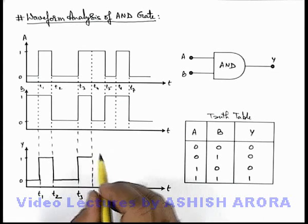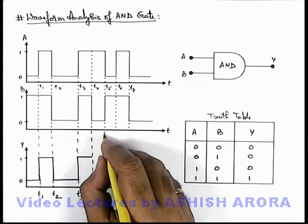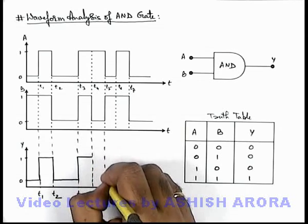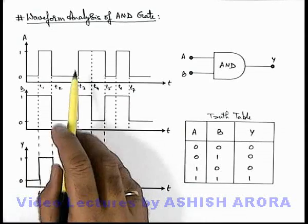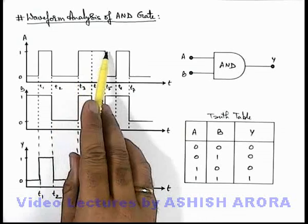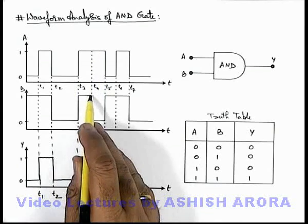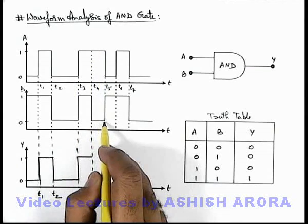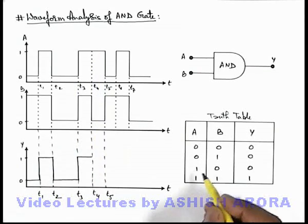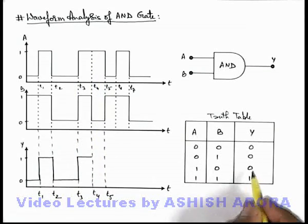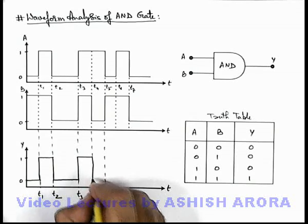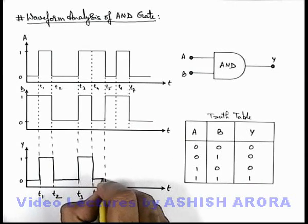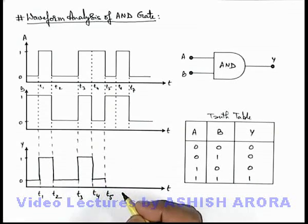And from time t4 to t5, here you can see signal A is in one state and B is in zero state. So if A is one and B is zero, the output will be zero — it will again drop back to zero state.